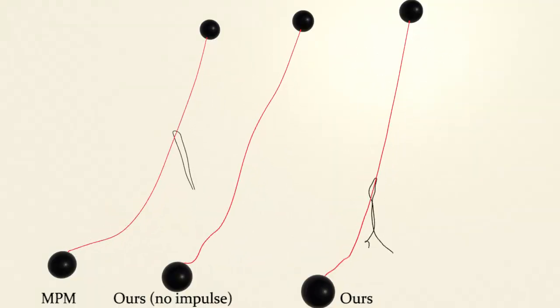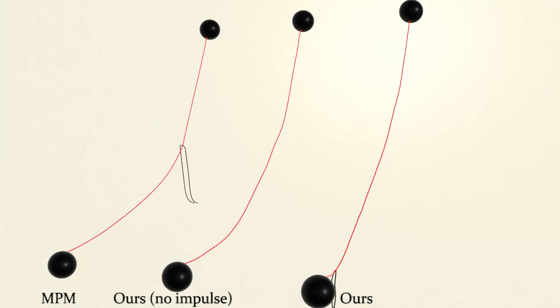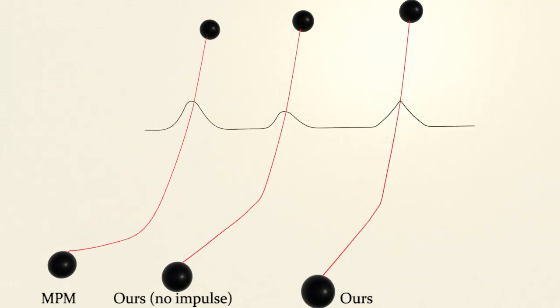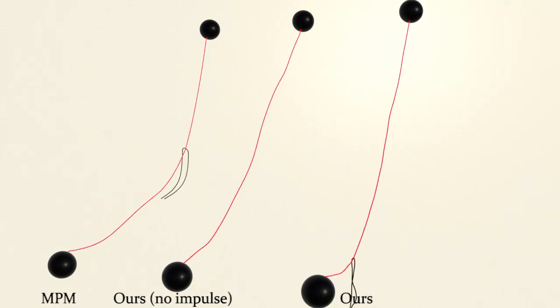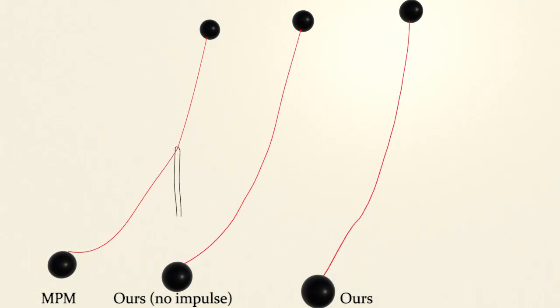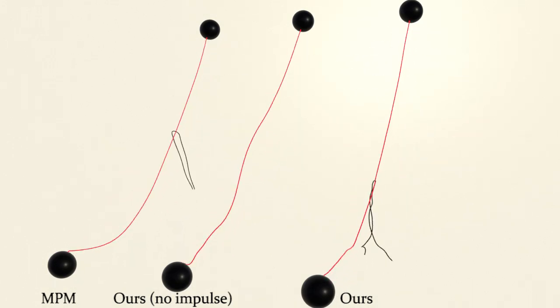On the left, we show that MPM suffers from uncontrolled numerical friction. The hybrid Lagrangian MPM method detects the collision but fails to fully resolve it. Our method on the right shows reasonable sliding behavior.